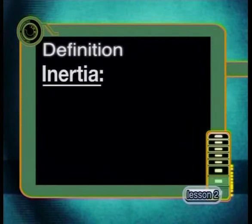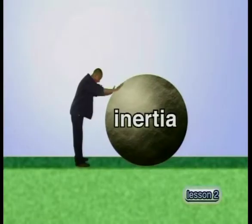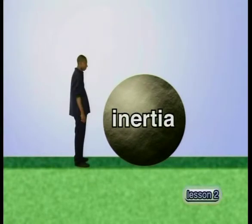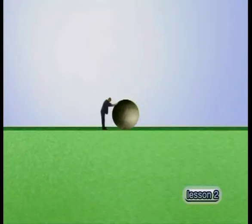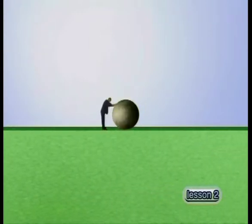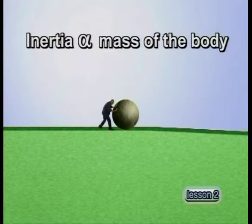The first property to look at is inertia. The property of a body that keeps it at rest or maintains its constant velocity is called its inertia. Inertia is a property of the body — it is not a force. It is the property which resists a change in the body's state of motion. A resultant force acting on a body must be big enough to overcome its inertia before it can cause the body to move. The more massive the body, the greater its inertia — inertia is directly proportional to the mass of the body.